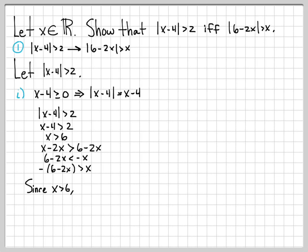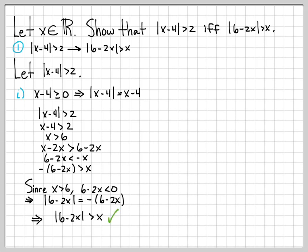Going back up a few lines, we had x greater than 6. If x is greater than 6, then 6 minus 2x is obviously less than 0. Since 6 minus 2x is negative, the absolute value of 6 minus 2x equals the negative of that quantity, meaning negative quantity 6 minus 2x equals the absolute value of 6 minus 2x. So we've shown that the absolute value of 6 minus 2x is greater than x, which is what we wanted, completing case i.